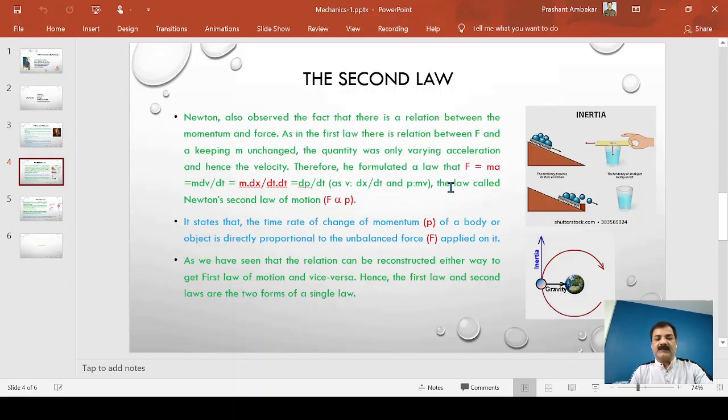Now, if you have seen the first law and second law, they have similar kind of relation, and therefore the laws can be constructed either way to get the first law of motion and vice versa. And also, the second law can be represented in the form of first law. And therefore, the first and second laws of motion are the form of a single law.